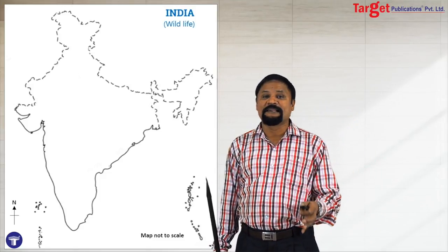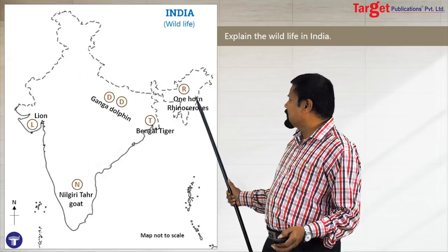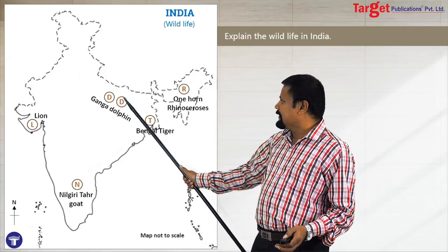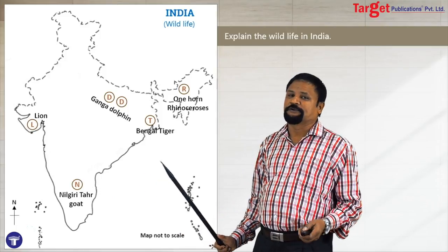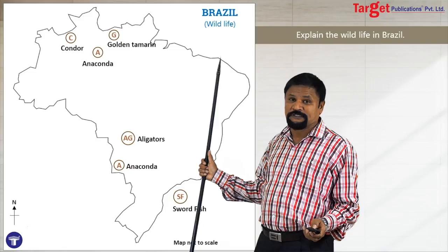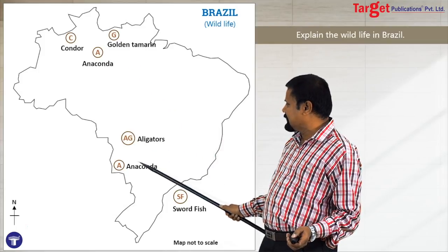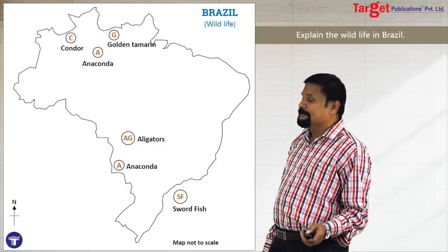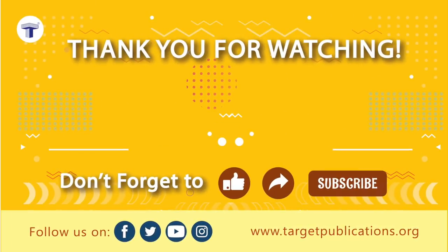For any question about wildlife of India, draw the India stencil and show some animals: Kaziranga wildlife sanctuary in Assam is well known for the one-horned rhinoceros, Ganga dolphin, Gujarat's forest lion, Bengal tiger, and Nilgiri Tahr. For Brazilian wildlife, show the condor bird, golden tamarin, anaconda, alligators, and swordfish — mark their locations on the map. Thank you for watching part one. Continue with part two. If you like this video, please subscribe and share, and leave your comments below.